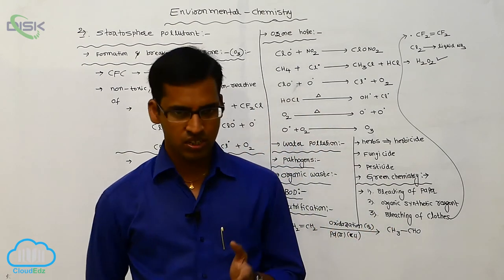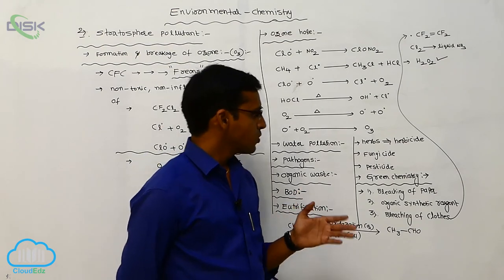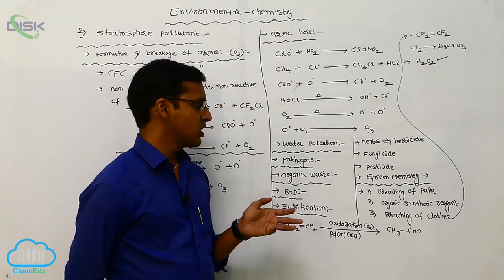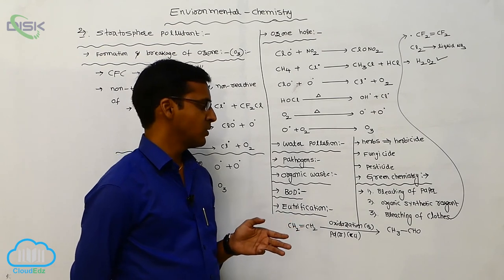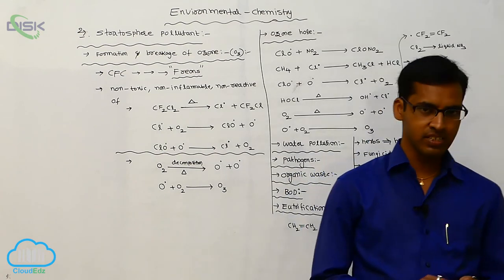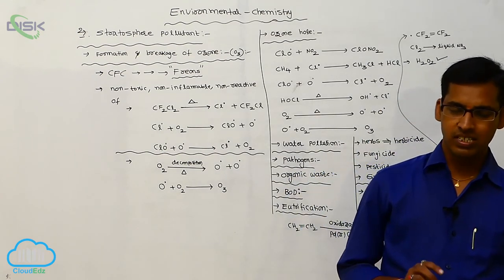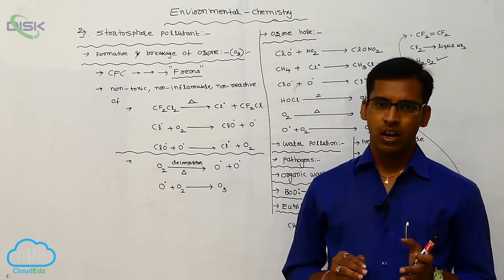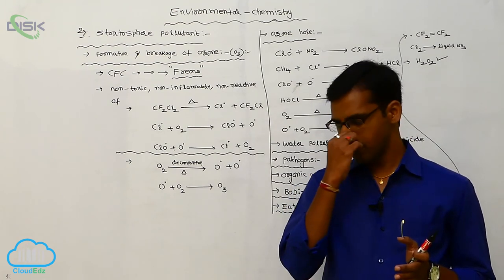This green chemistry is advanced one. It is used in various fields. I am considering only a few. One is bleaching of paper, organic synthetic reagent, and bleaching of cloth. In this bleaching of cloth, the chlorofluorocarbons, CF2 double bond CF2, we use. But nowadays we use hydrogen peroxide.